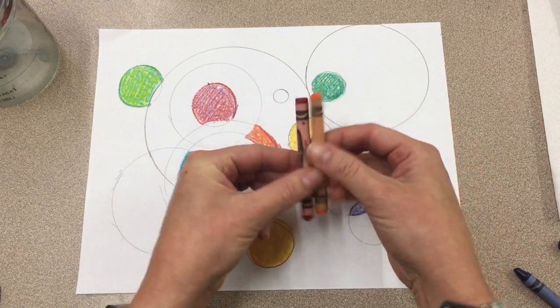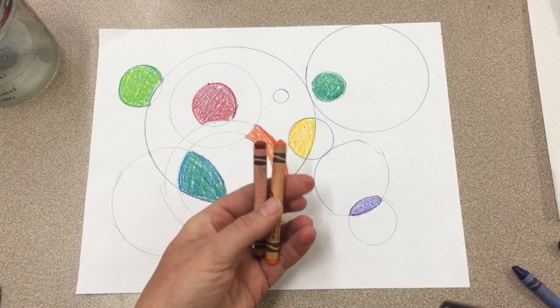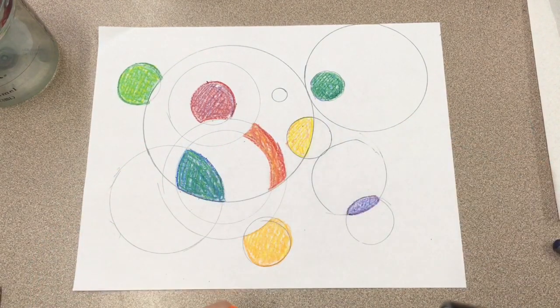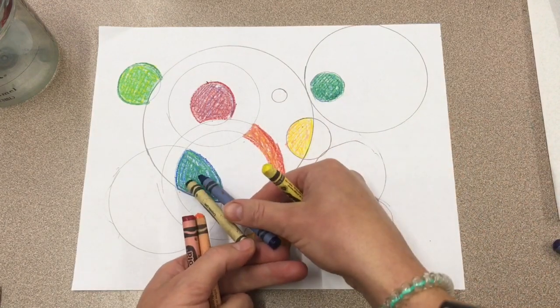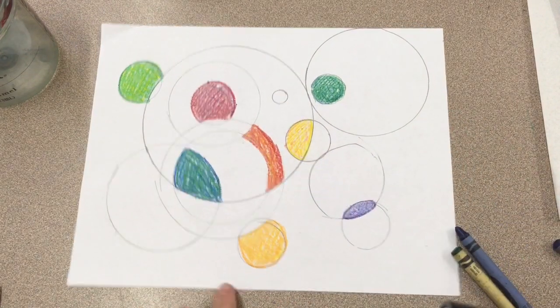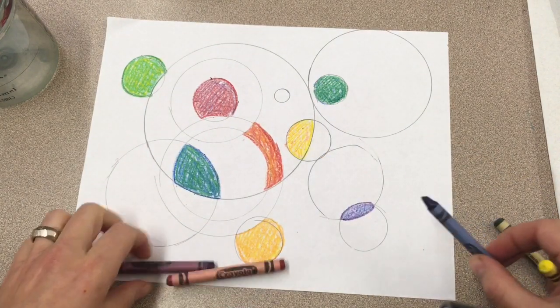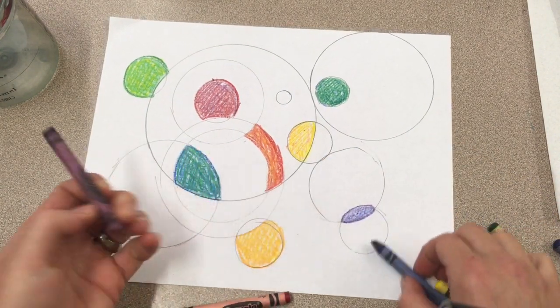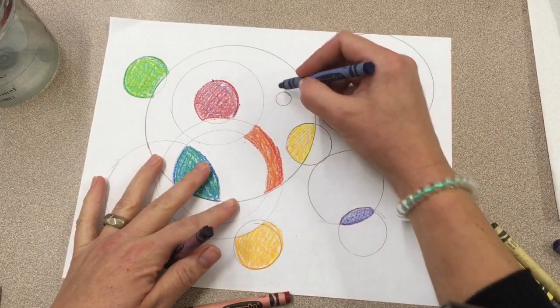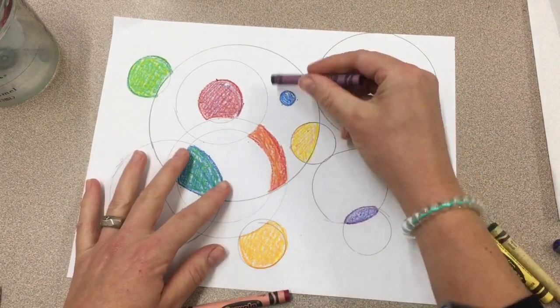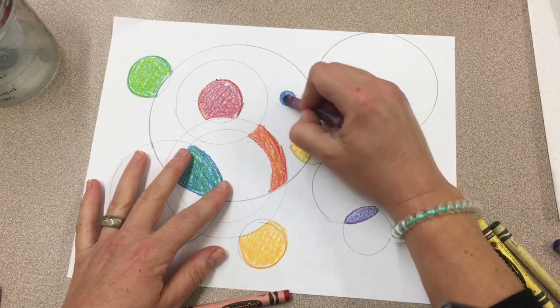So for example, red orange, yellow orange, blue green, red violet, blue violet. So I just layered them together. So if I was making blue violet, I would color with my blue.